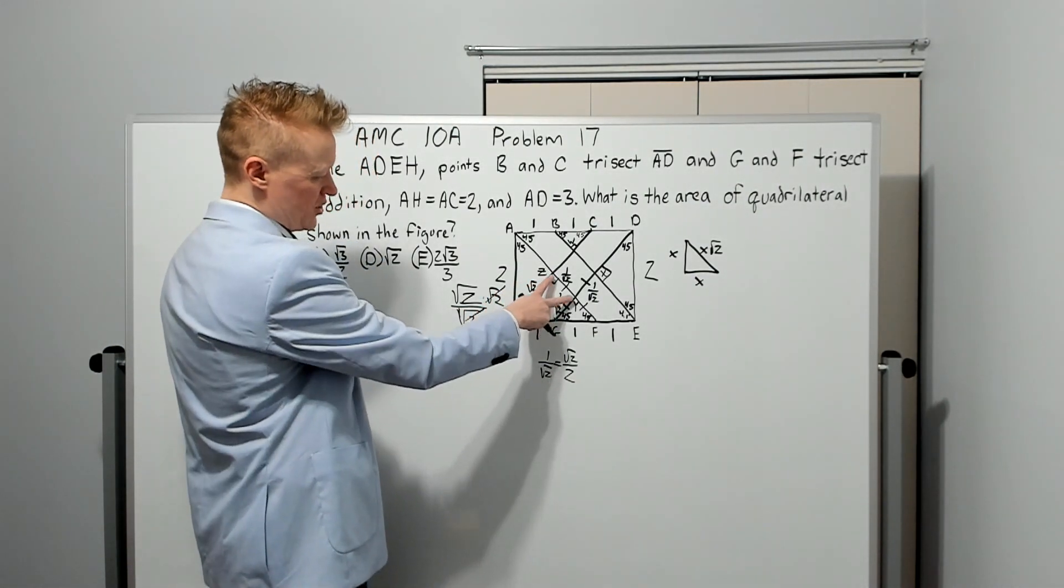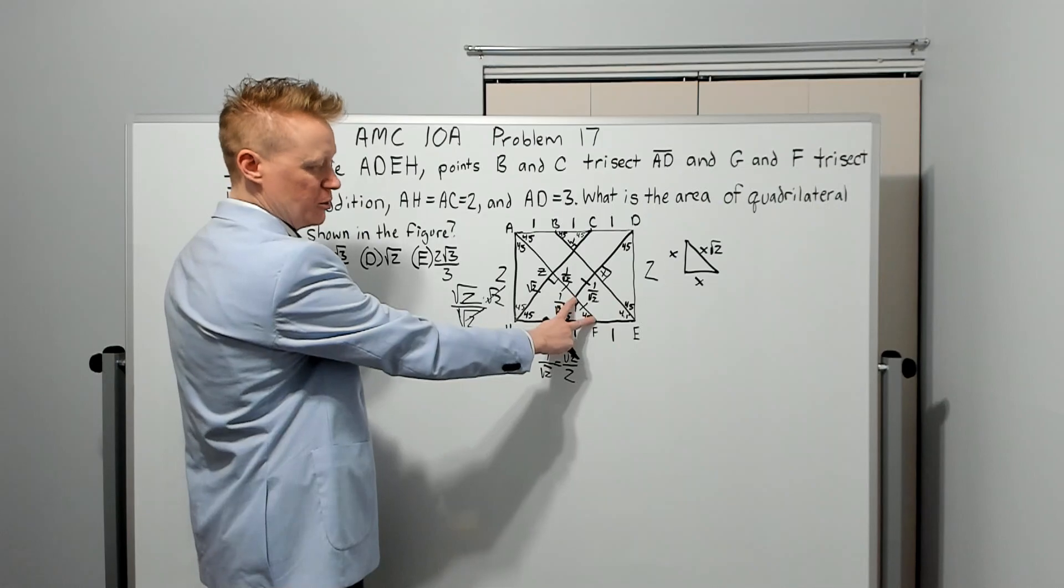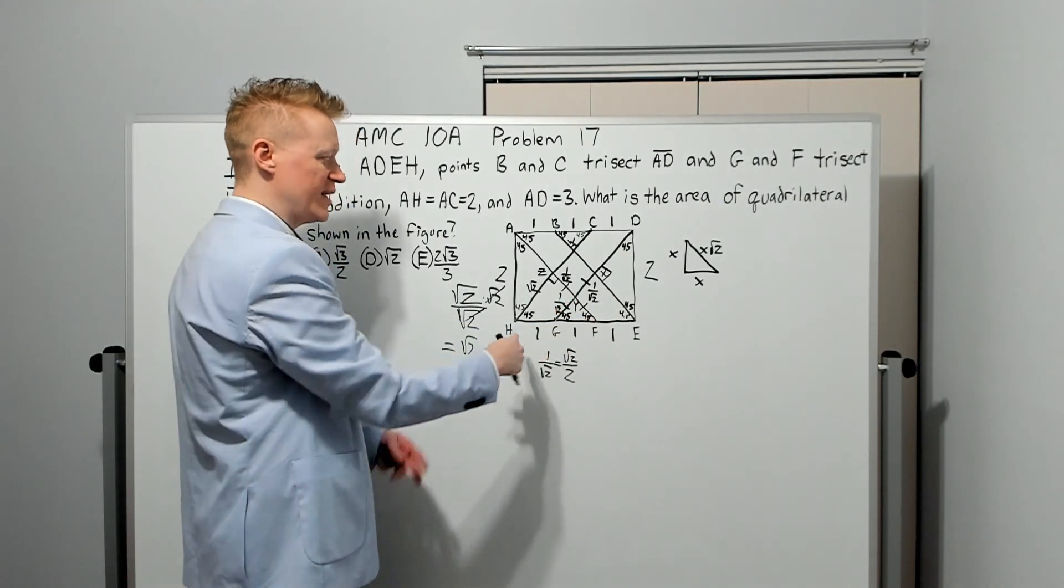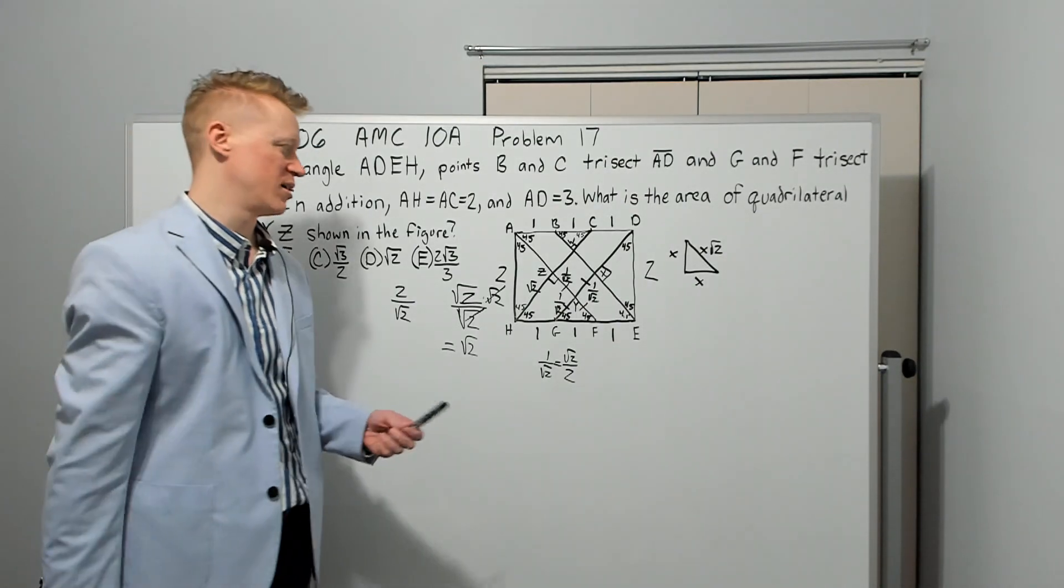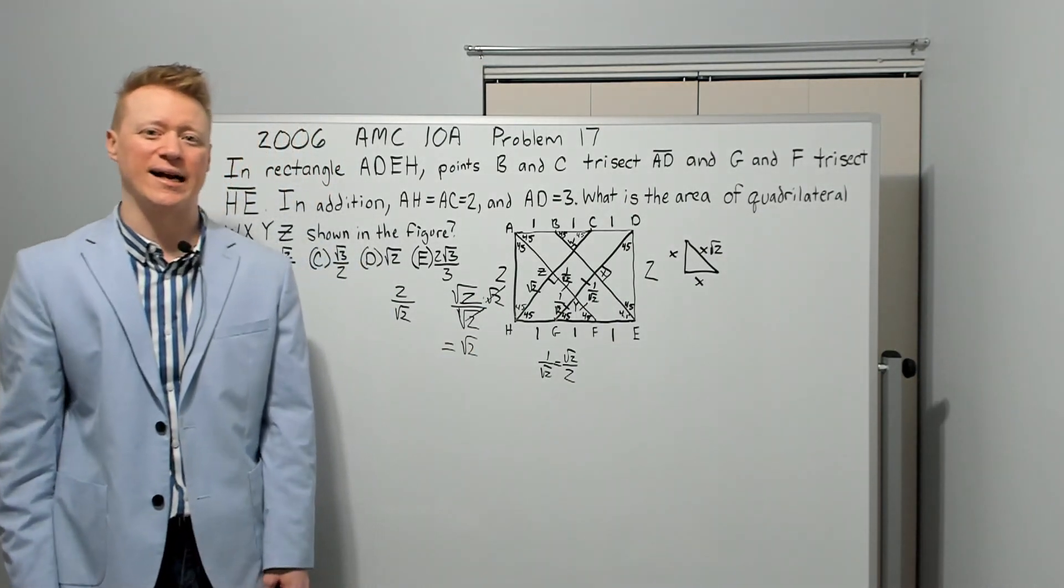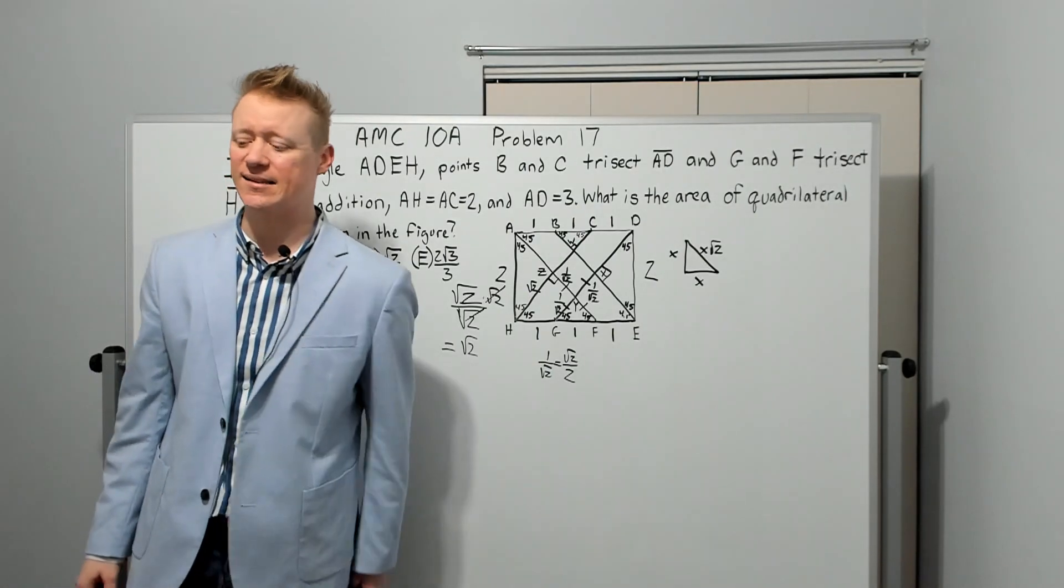If we check this side, one over root two plus one over root two is just as we had two over root two. This serves us pretty strong confirmation our answer is correct. Got to go to work. See you guys in the next video.